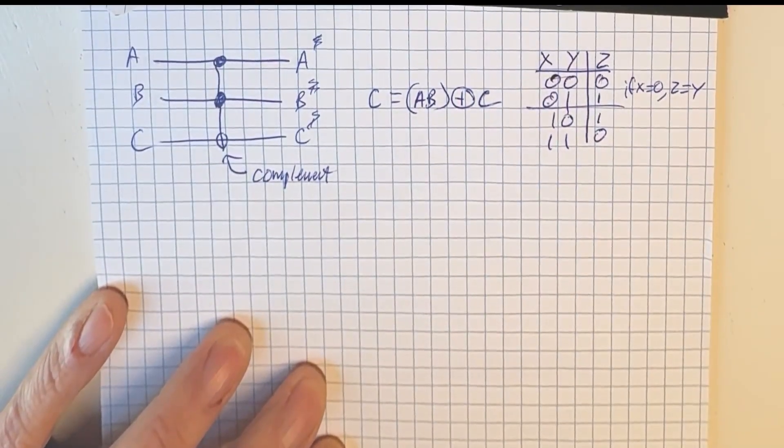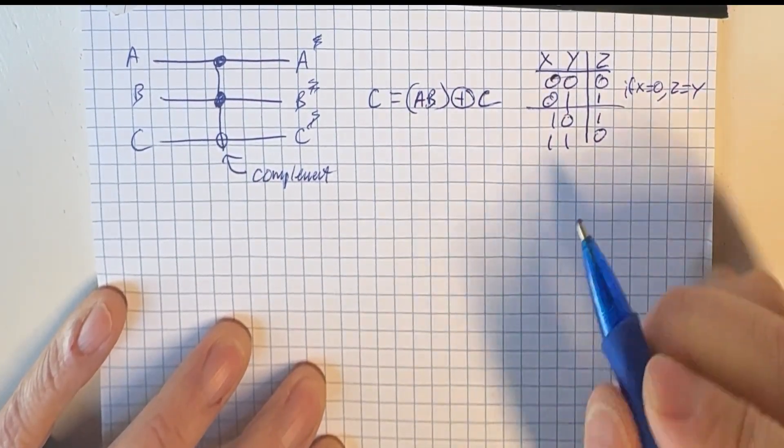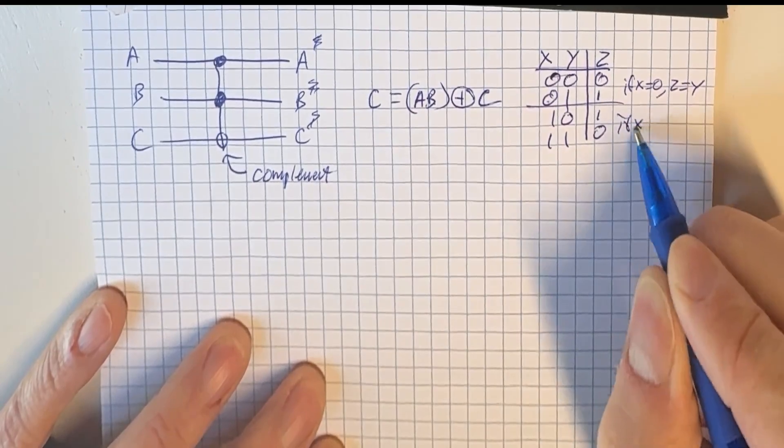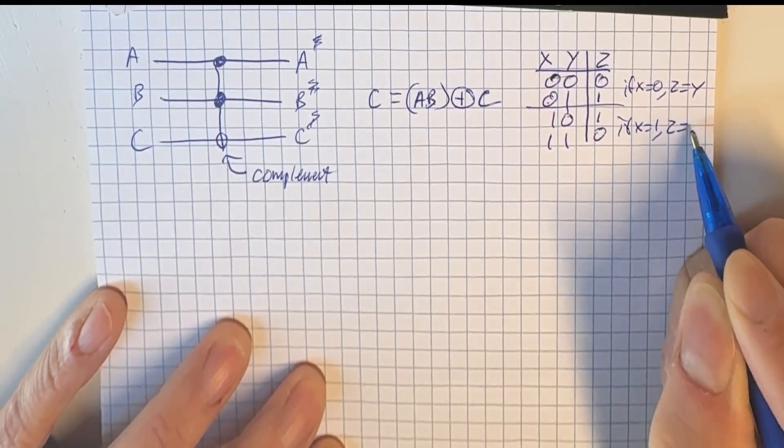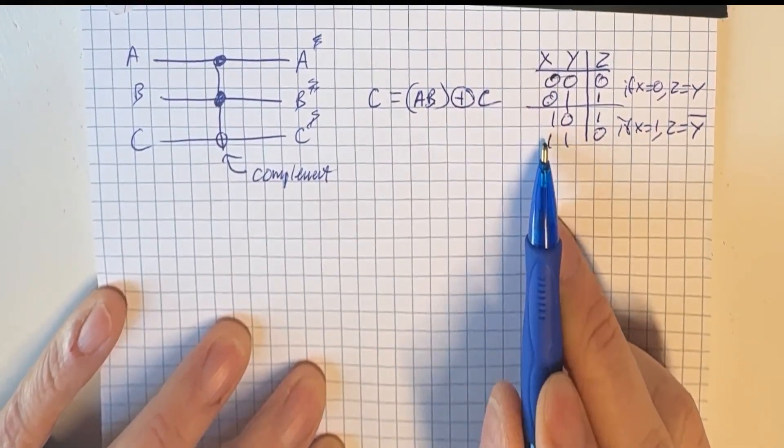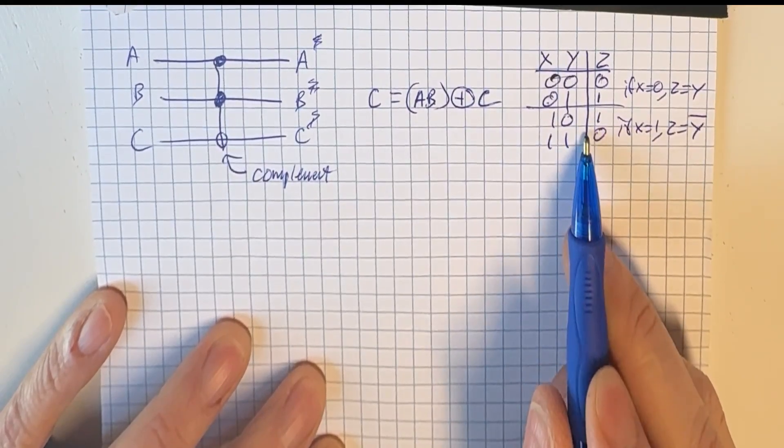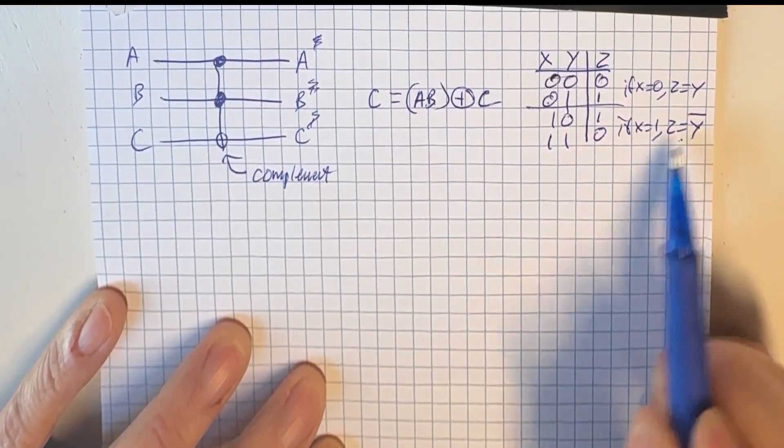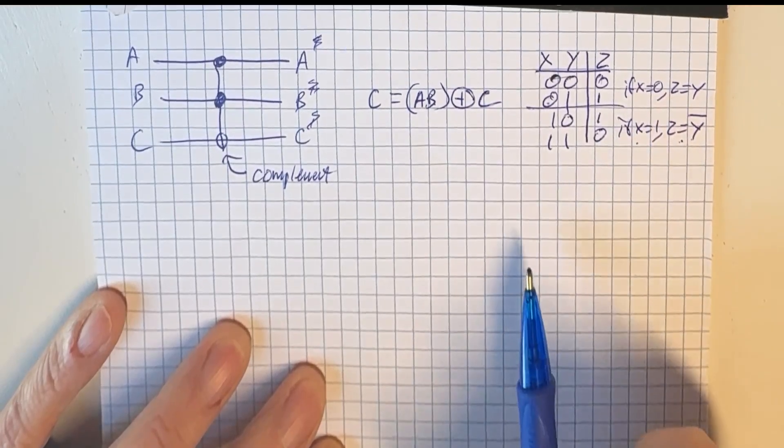Okay, we're back. And yeah, and then if X is 1, Z is the same as the opposite of Y, right? If X is 1, then Z is the opposite of Y. So we call it controlled complement. We flip if X is 1. We don't flip if X is 0.